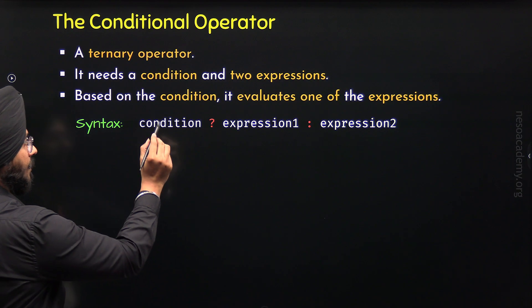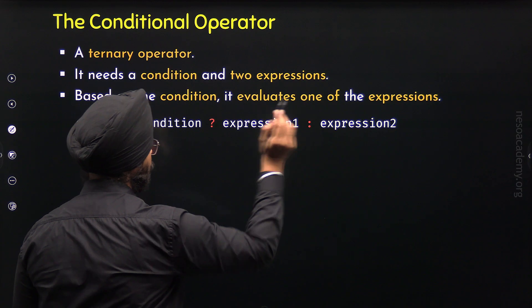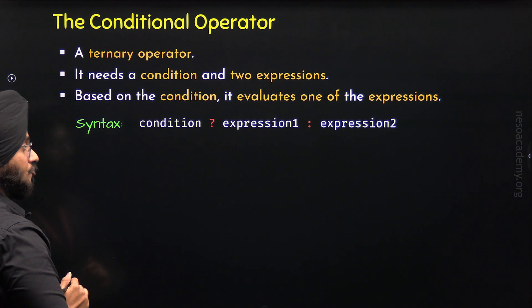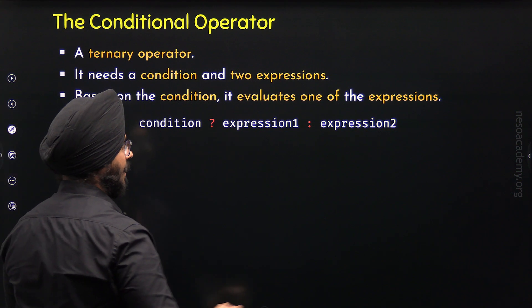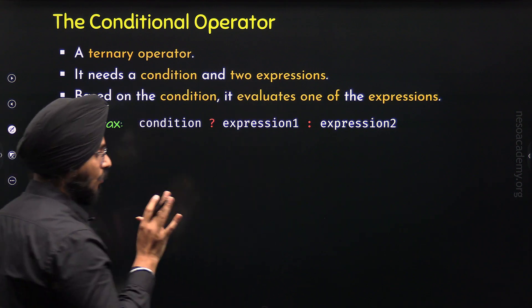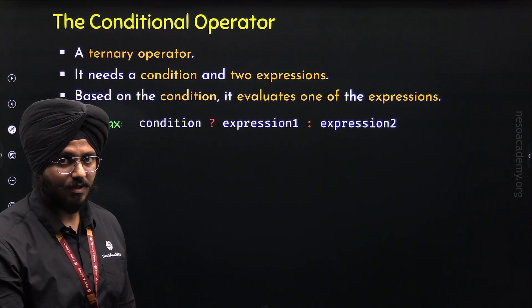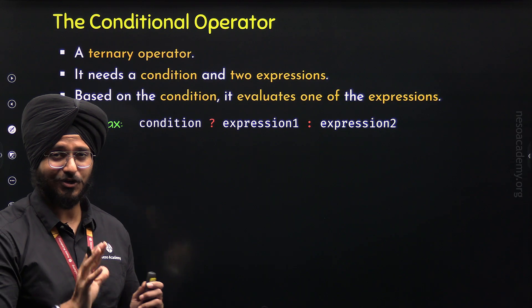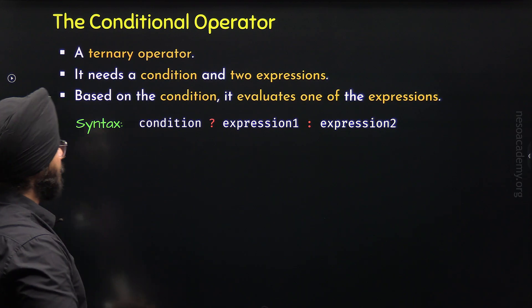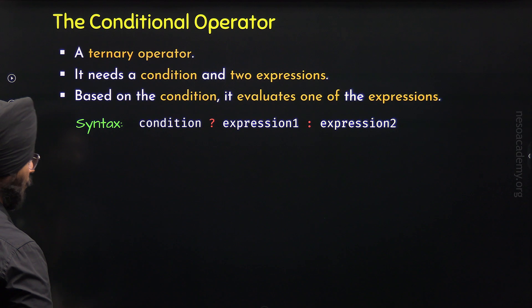Based on the condition, either expression 1 will get evaluated or expression 2. If the condition turns out to be true, then expression 1 will get evaluated. Otherwise, if the condition turns out to be false, expression 2 will get evaluated. To understand this syntax better and implement this behavior, let's take one example program.